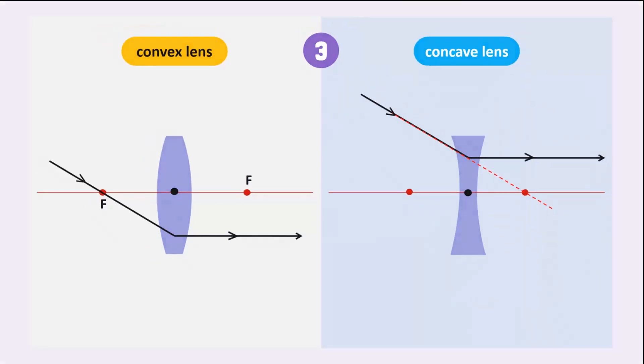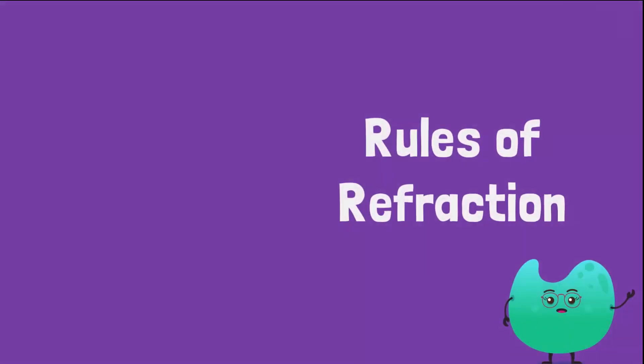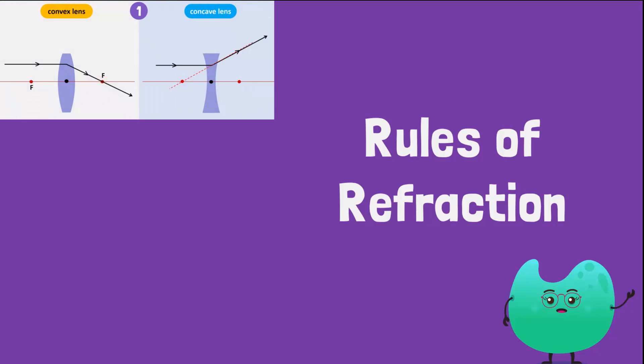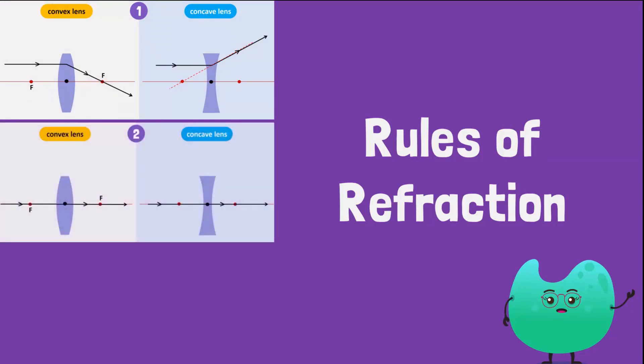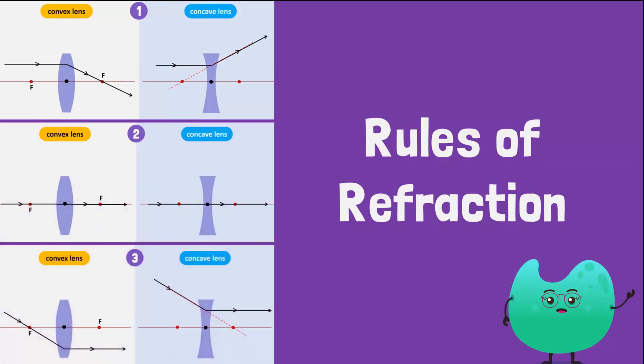These ray diagrams summarize the rules of refraction for three basic scenarios: when the incident ray is parallel to the principal axis, when the incident ray passes through the optical center, and when the incident ray passes through the focal point.